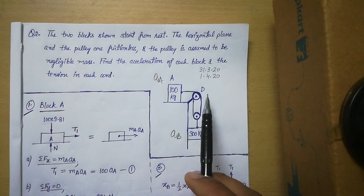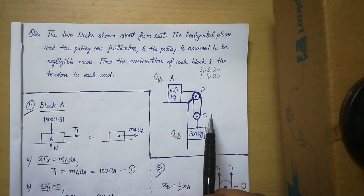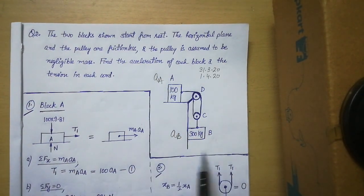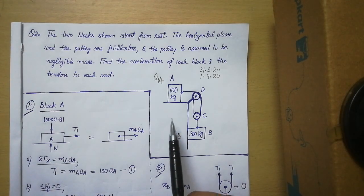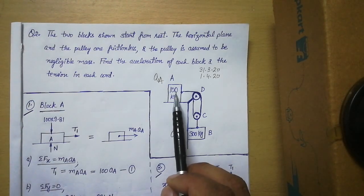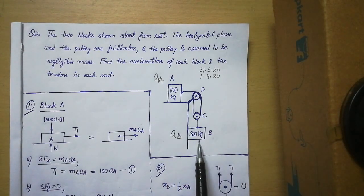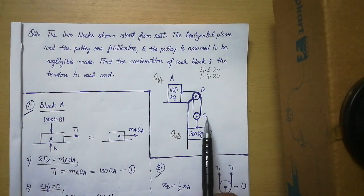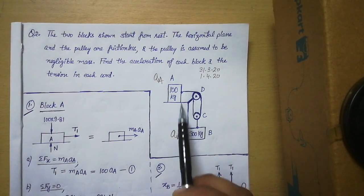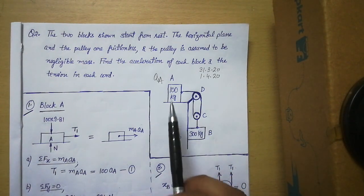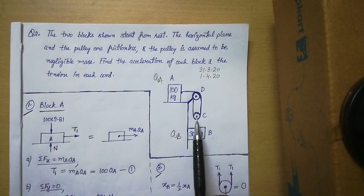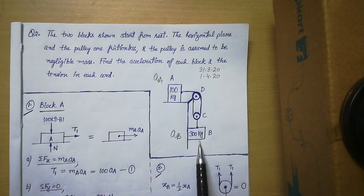Now observe the diagram given to us. In this diagram there are three bodies which are in motion: block A moving towards the right, block B moving in the downward direction, and pulley C moving in the downward direction. Pulley D is fixed — it is not moving. To solve this problem I have to draw the free body diagrams of block A, pulley C, and block B, because these are the bodies in motion.